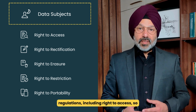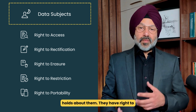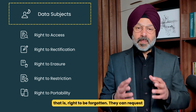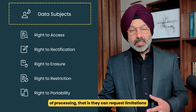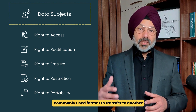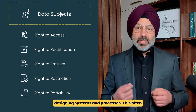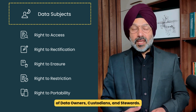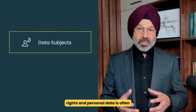Data subjects have significant rights under modern privacy regulations, including: the right to access — they can request copies of all personal data an organization holds about them; the right to rectification — they can request correction of inaccurate personal information; the right to erasure, or right to be forgotten — they can request deletion of their personal data under certain circumstances; the right to restriction of processing; and the right to data portability — they can request their data in a structured, commonly used format to transfer to another service provider. Organizations processing personal data must consider these rights when designing systems and processes, which often impacts the work of data owners, custodians, and stewards.